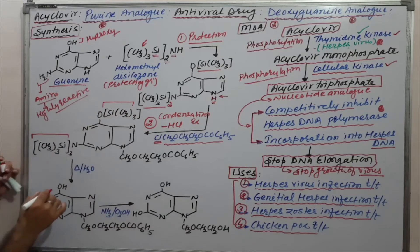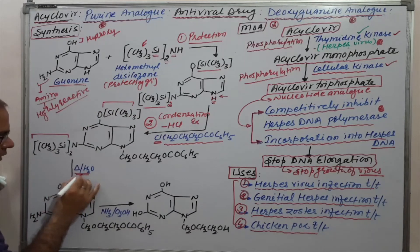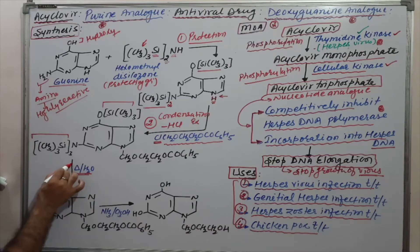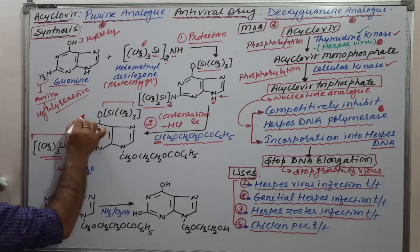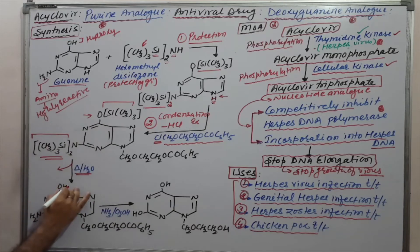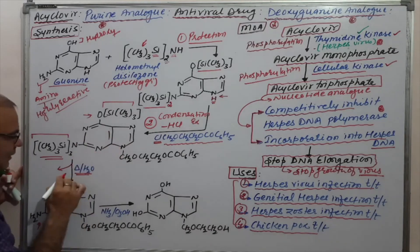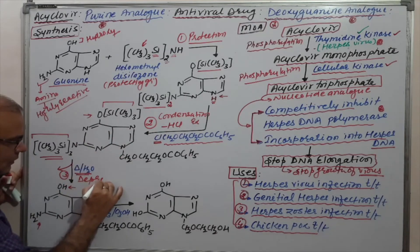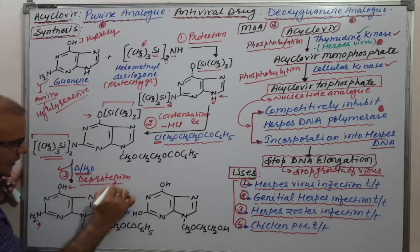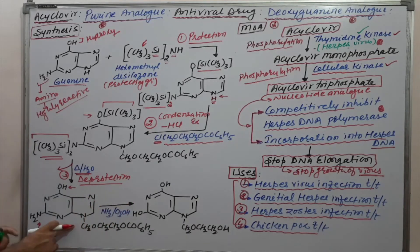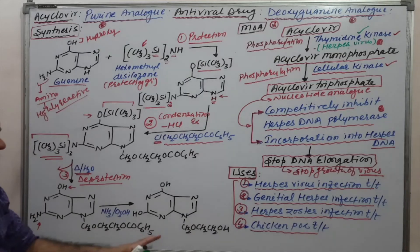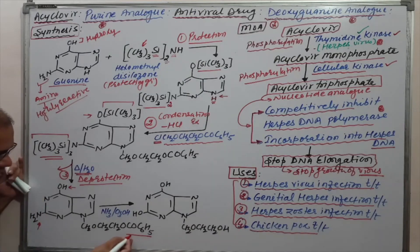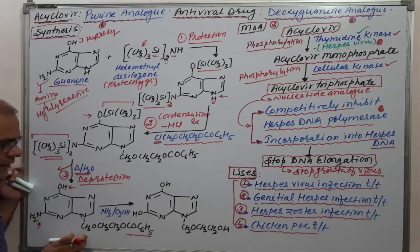After obtaining the condensation product, we proceed to deprotect the protecting groups. By heating with water, the amino group and hydroxyl group are deprotected, regenerating the OH group and NH2 group. This is the third reaction: deprotection.